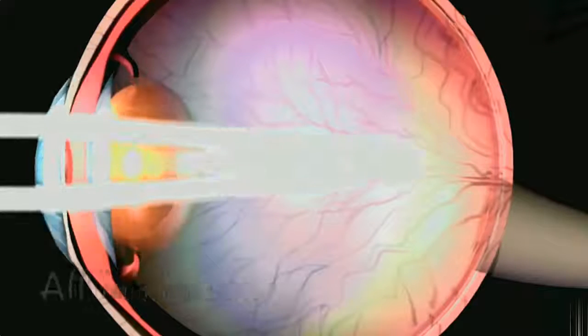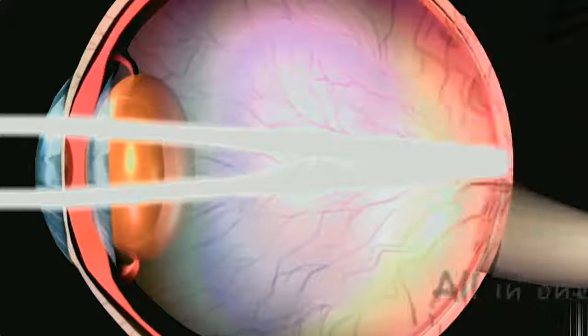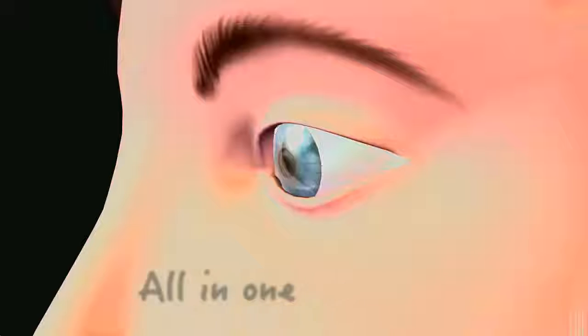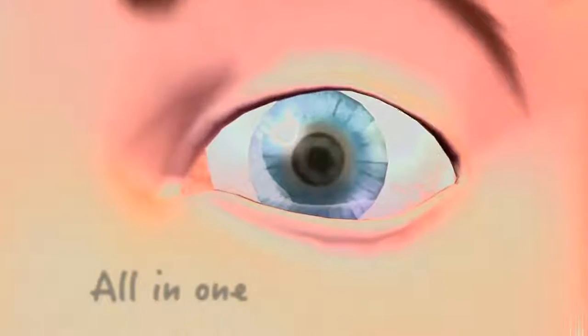Continual adjustment of the pupil and lens regulates the entry and focusing of light. Every blink helps our eye's natural defense system.